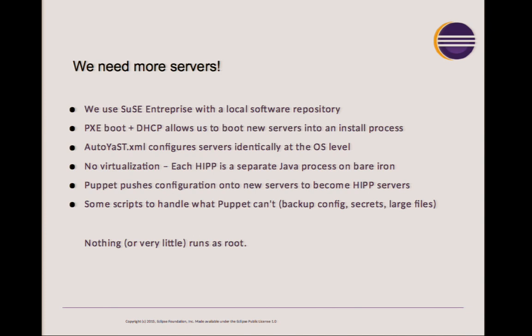We use Puppet to push as much configuration onto the server as possible, storing configurations in Git. Some configurations we cannot or choose not to store in Git — things like passwords and secrets — which we stash away and handle with scripts.